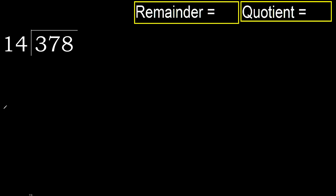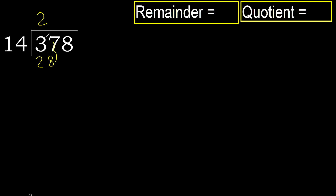378 divided by 14. 3 is less, therefore take the next two digits: 37. 37 is not less, therefore work with 37. 14 multiplied by which number is nearest to 37 but not greater? 14 multiplied by 3 is greater; 14 multiplied by 2 is 28, which is not greater.